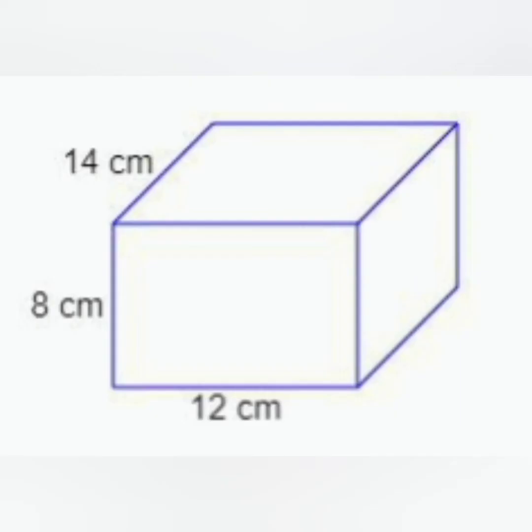Here the length of the cuboid is 12 cm, breadth is 14 cm and the height is 8 cm. So the volume of the cuboid will be found by multiplying all these three units and we get it as 1344 cubic cm or cm³.